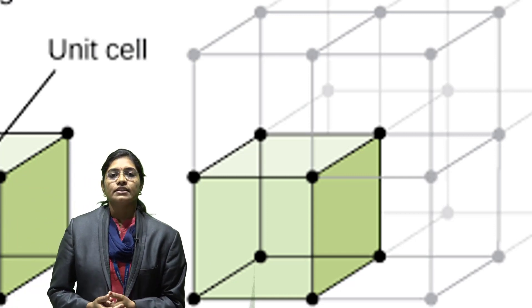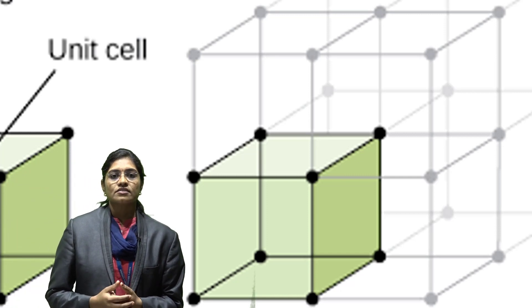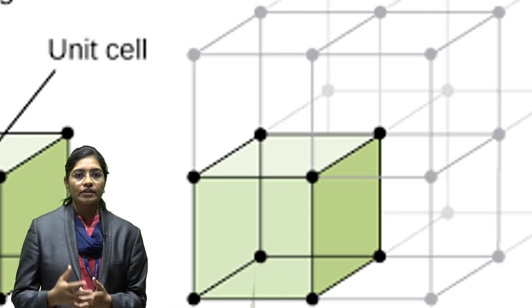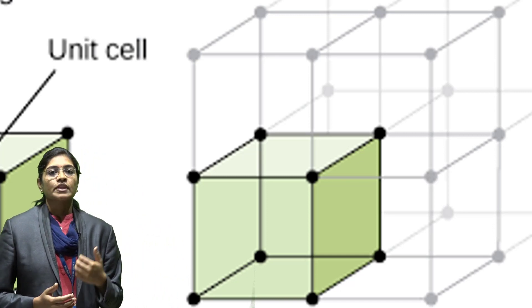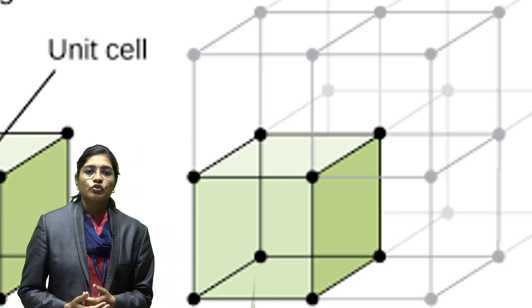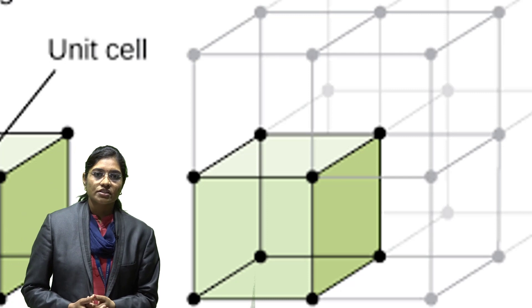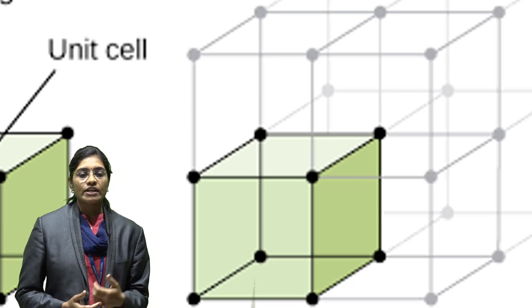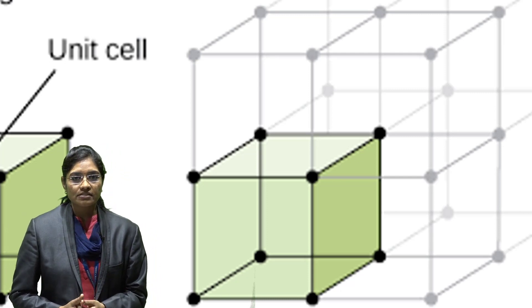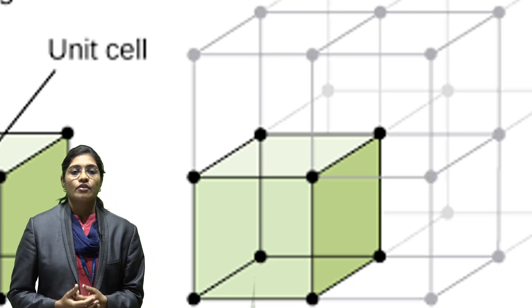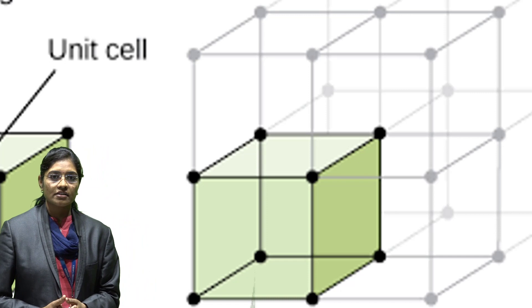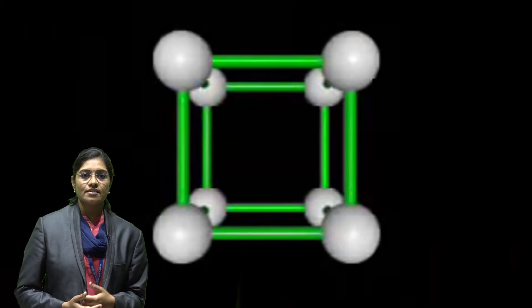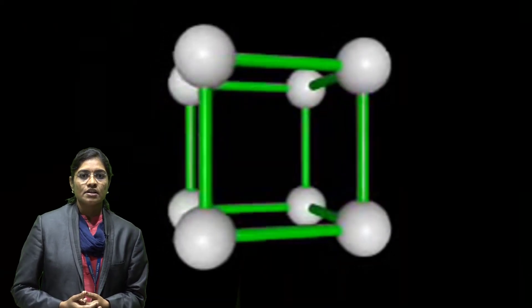Crystal structure has four types: simple cubic crystal structure, body center cubic crystal structure, and face center cubic crystal structure. We will see each one by one.